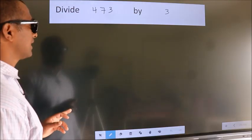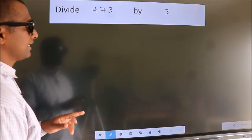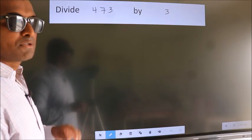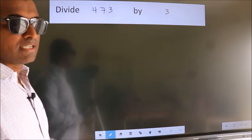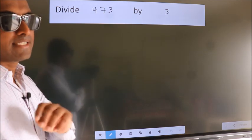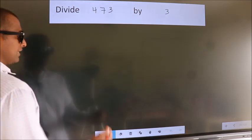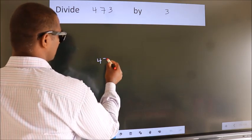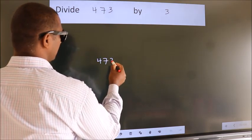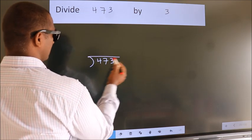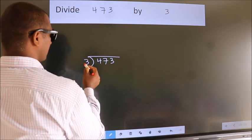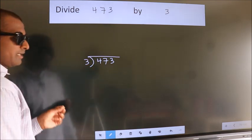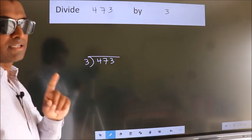Divide 473 by 3. To do this division, we should frame it in this way: 473 here, 3 here. This is your step 1.